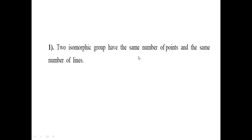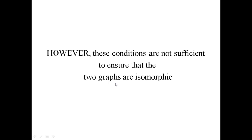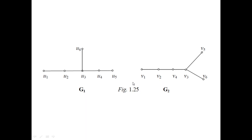Two isomorphic graphs have the same number of points and same number of lines. Hence we can say that two graphs are isomorphic. But these conditions are not sufficient to show that two graphs are isomorphic. Let's see the next example. G1 and G2 consist of 6 points each, and you can see the number of lines in G1: 1, 2, 3, 4, 5. And for G2: 1, 2, 3, 4, 5. Same number of points and same number of lines. Check whether these two graphs G1 and G2 are isomorphic.